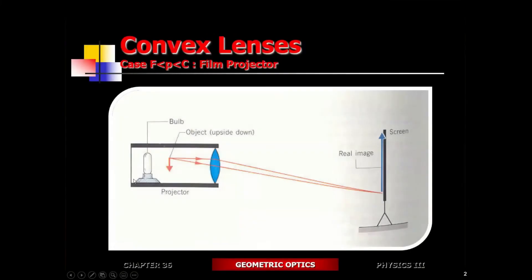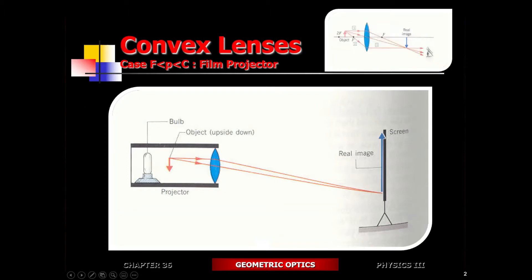So that's one application of it. You got the projector, the object, the image — the film is going to be upside down, and then it's going to be projected onto the screen right side up, and it's going to be larger, so you can actually see the details on it.